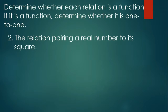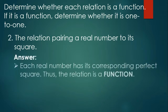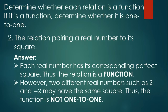Second example: the relation pairing a real number to its square. For example, 3 squared is 9, but negative 3 squared is also 9. Each real number has a corresponding perfect square, so the relation is a function. However, two different real numbers such as 2 and negative 2 can have the same square — both give 4. So the function is not one-to-one.